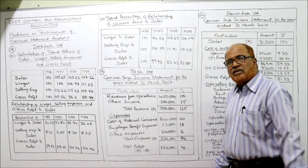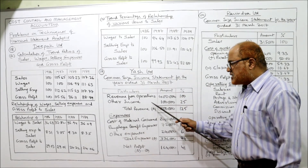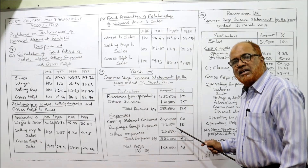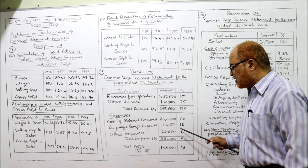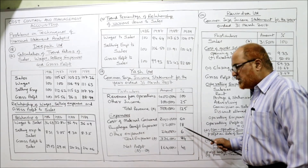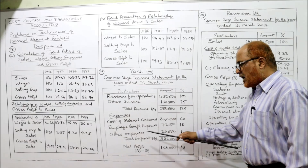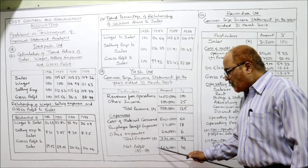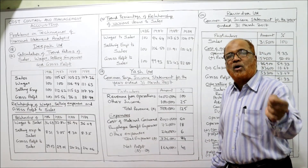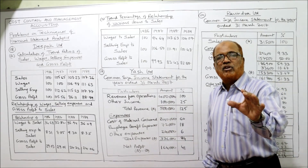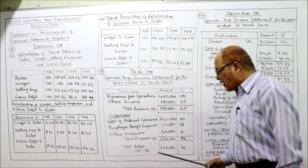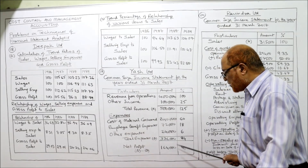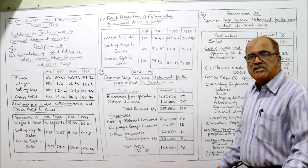By seeing this percentage, we can conclude: other income is 25% of revenue from operations, cost of material is 60%, employee benefit expenses are 18%, other expenses are 6%, and profit is 41% of revenue from operations. That means if revenue from operations is 100, we get 41 as net profit — for every 100 rupees of sales, we are getting 41 rupees of net profit.